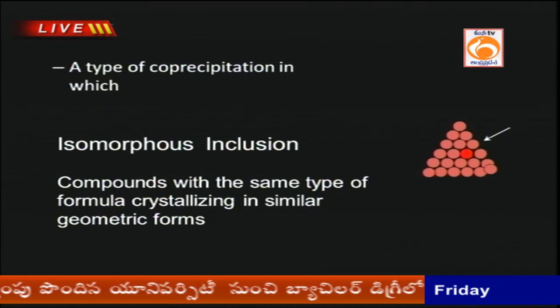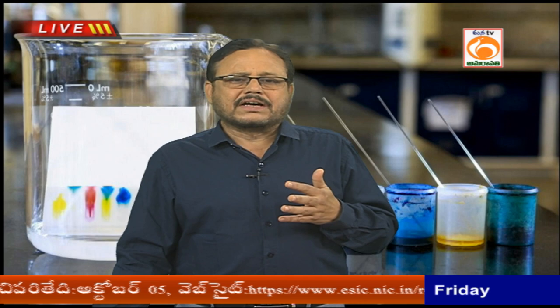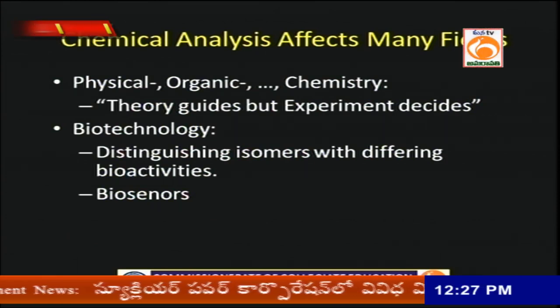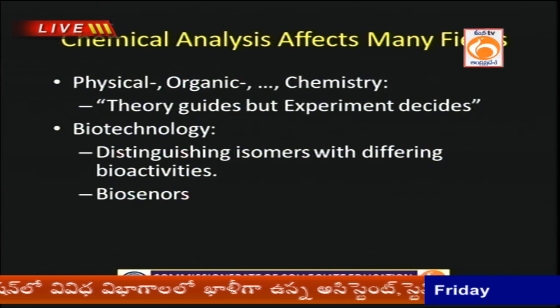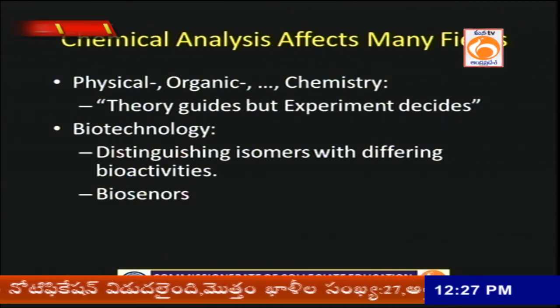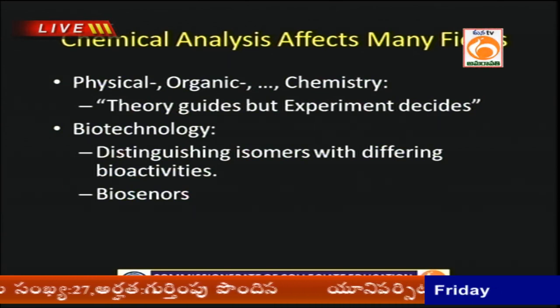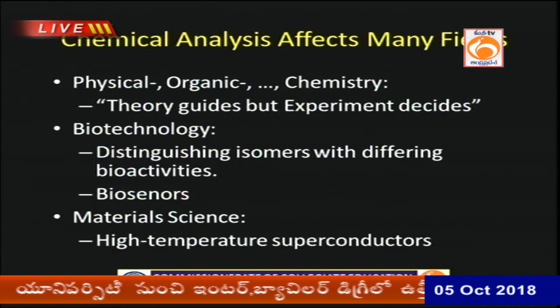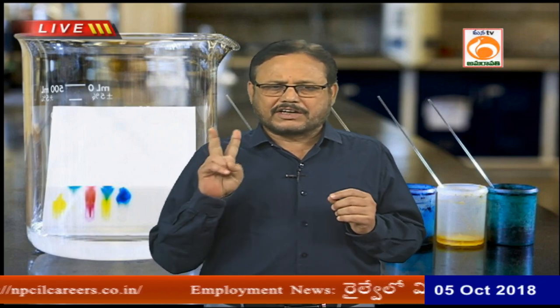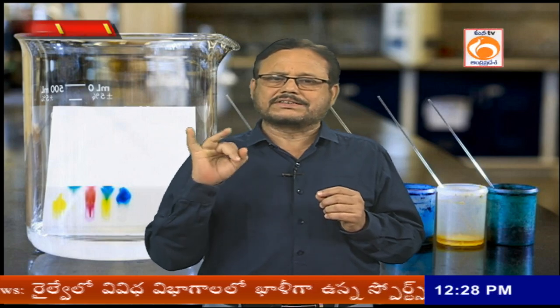To summarize: volumetric analysis is about identifying the volume of the substance, and gravimetric analysis is about knowing the exact weight of the substance. Chemical analysis is useful in physical chemistry, organic chemistry, analytical chemistry, biochemistry, material science, and related fields. Two methods have been covered in this module: volumetric analysis and gravimetric analysis.